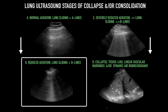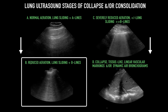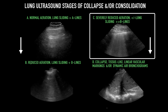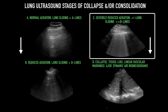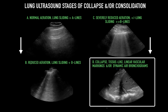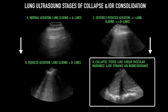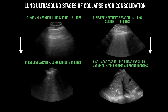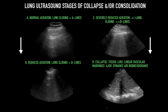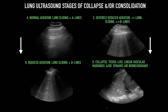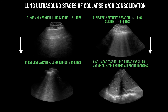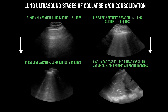These B-lines then coalesce, as we can see here in B. In C, we see severely reduced aeration, which may be accompanied by decreased lung sliding. And then finally, as we see complete collapse, the lung becomes homogeneous, or tissue-like. An underappreciated feature is progressive decrease in lung sliding. This is secondary to inflammation that essentially fuses the pleura, but may also be due to local decreased lung expansion or insufflation.